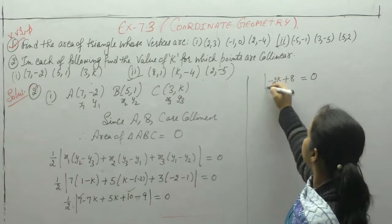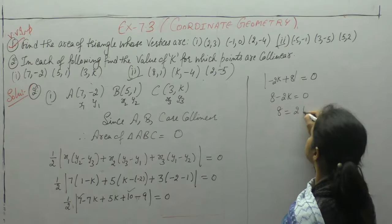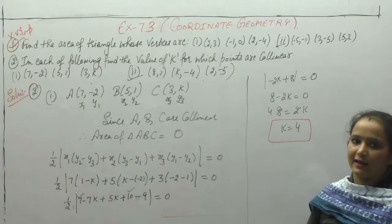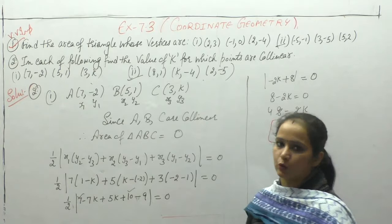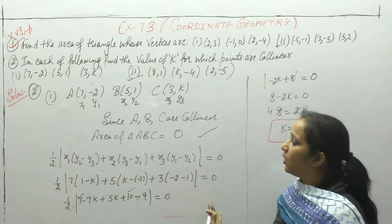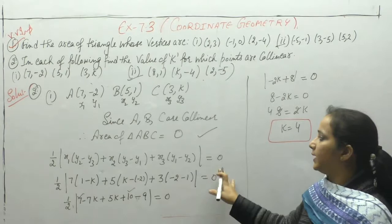So 8 minus 2K is equal to 0, therefore 8 equals 2K, and K की value आई 4. जब K की value 4 होगी, तो these vertices are collinear, एक ही line में होंगे. अगर area के method से prove करना है कि points are collinear, then their area will be equal to 0. Points collinear हैं इसलिए हमने area को 0 के equal रखा, और K की value 4 आई.